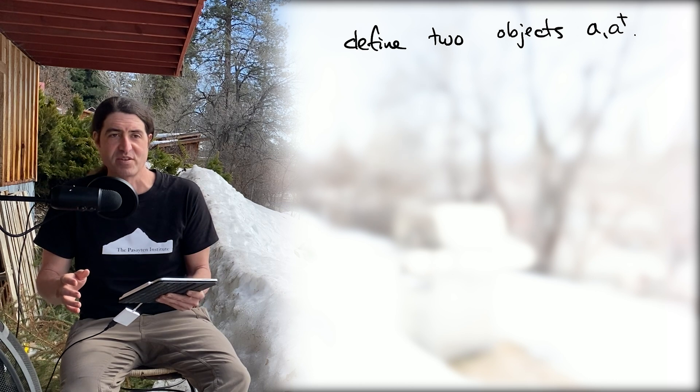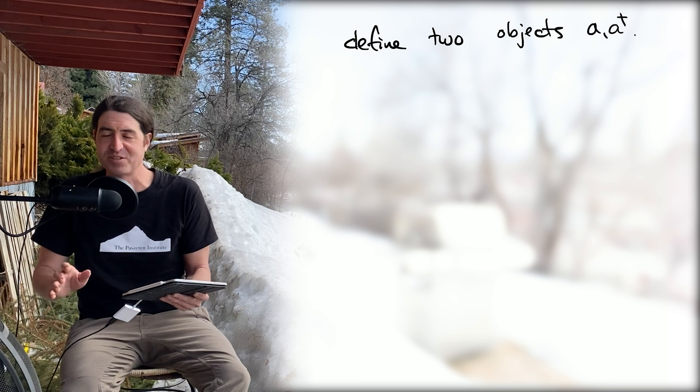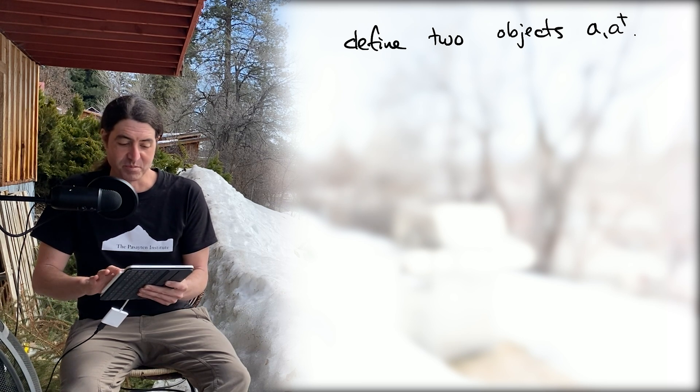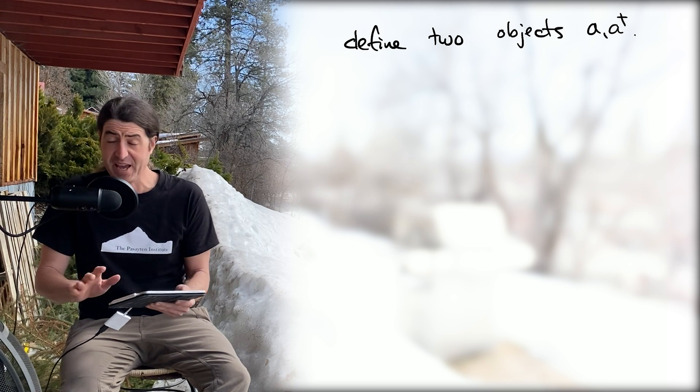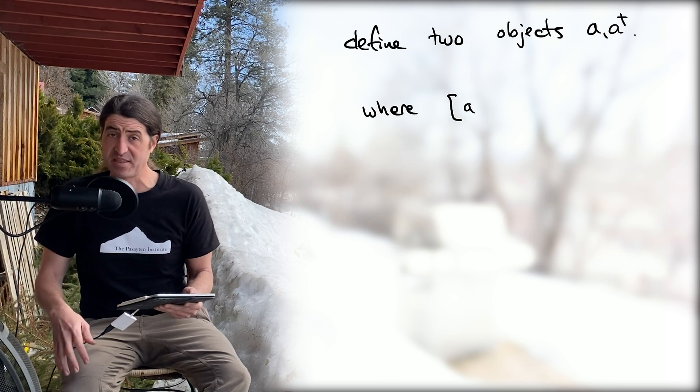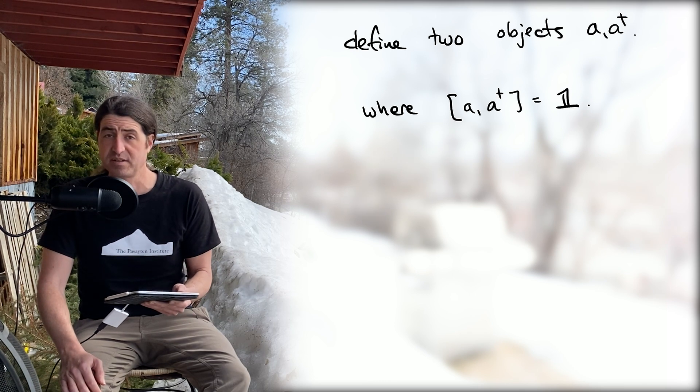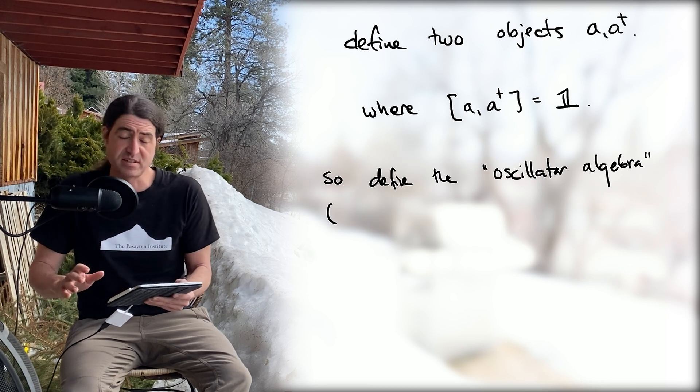We're committing the physicists' sin by assuming that we have an adjoint already without ever telling you what the Hilbert space is or the module or what the inner product might be. But let's just assume that these two operators are different and they're subject to the relationship that the commutator of a with a dagger is equal to one. This defines what we call the oscillator algebra.